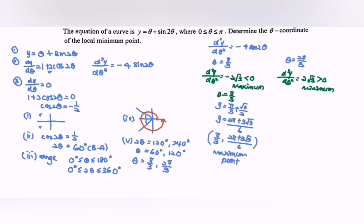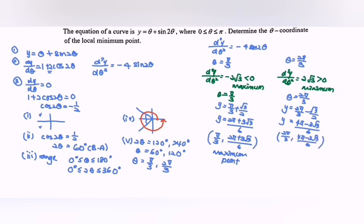For θ = 2π/3, substituting gives y equal to 2π/3 minus √3 over 2. Rewriting, y equals 4π minus 3√3 over 6. So the minimum point is (2π/3, (4π − 3√3)/6). Since the question asks for the θ coordinate of the local minimum point, that is our main target: θ = 2π/3.